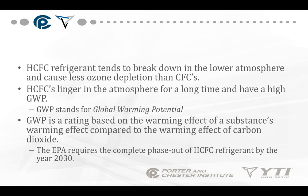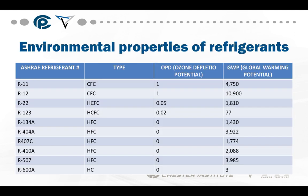HCFC refrigerants tend to break down in the lower atmosphere and cause less ozone depletion than CFCs do. However, the tradeoff is that HCFCs linger in the atmosphere and have a higher GWP — global warming potential. The GWP ratio is based on the warming effects of a substance compared with the warming effect of carbon dioxide. The EPA requires a complete phase-out of HCFC refrigerants by the year 2030 because of the global warming potential. On the reference chart, note that R12 has an ODP of 1 and HFCs have an ODP of 0.